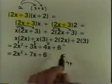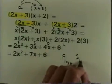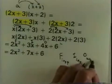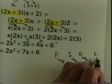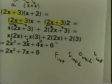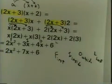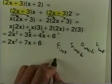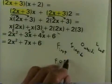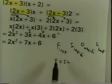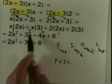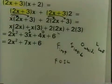So we have: First, Inside, Outside, and Last. F-I-O-L doesn't spell anything, but if I write it as F-O-I-L, we get FOIL. With the FOIL method, we multiply the First, the Outside, the Inside, and the Last. It gives us the same result — 4x plus 3x is still 7x.